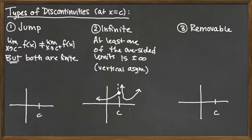Because see, if they don't match and one of them happens to be infinite, we're not at a jump anymore. We are back at the first thing that we were looking at, infinite discontinuity. So if both of the sides are finite, but they don't go together, that's a jump.